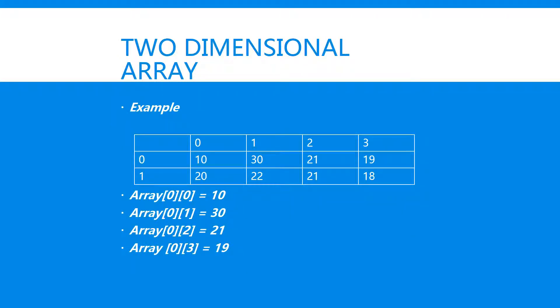To sum up what's happening here: in a two-dimensional array, across the top we've got our columns—so there's 0, 1, 2, 3—and then we've got our rows.